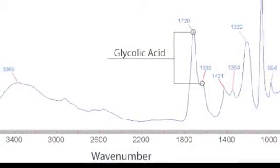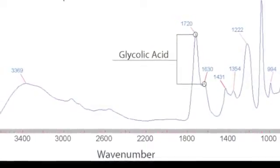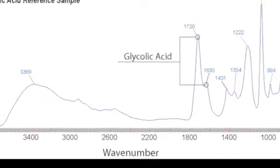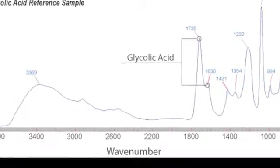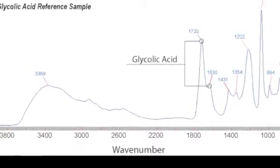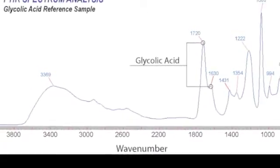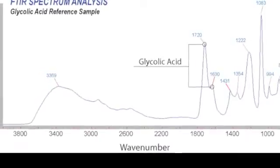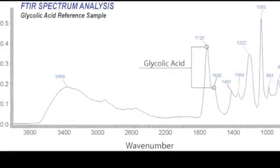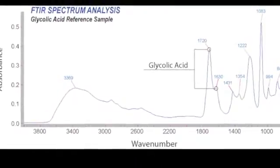This scan shows an industry standard glycolic acid 70% aqueous solution as a reference sample, which is actually in equilibrium between glycolic acid and a small amount of glycolic acid dimer. This equilibrium is evident in the IR of the two peaks found in the carbonyl region at 1720 and 1630.